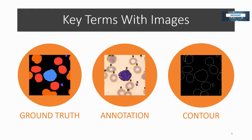Key term three is a contour — simply drawing the edges around an object. You can get this information multiple ways. Later I'll upload an example on how to build a contour image from JSON annotation outputs into my GitHub — I'll provide the link at the end of this presentation. Contours are common in computer vision, but you won't always have to produce an image like this. When you do, it can sometimes be tricky to produce, so knowing the concept and term is really helpful.